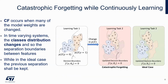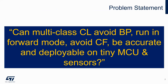Even if we know that backpropagation is quite accurate, if we support continuous learning, then there is a change in the distribution of the classes. This typically causes catastrophic forgetting. There is a boundary between the classes that will be moved due to the new distribution of the features proposed in a time-varying fashion. The question we posed in this paper was whether we can support multi-class without backpropagation to support continuous learning, in order to avoid catastrophic forgetting, and deploy the workload on tiny resource devices.